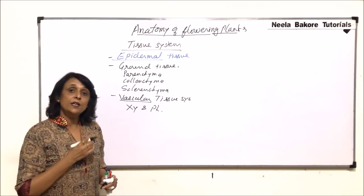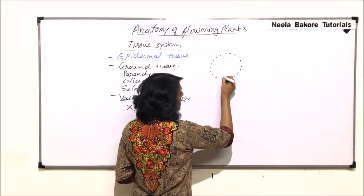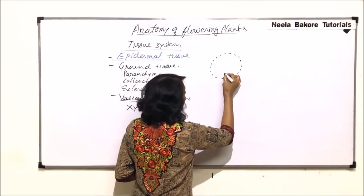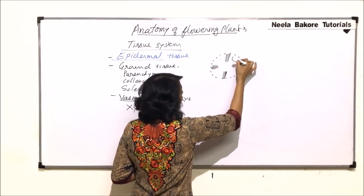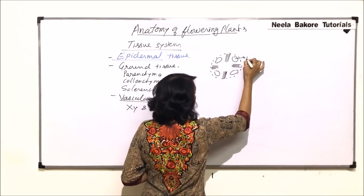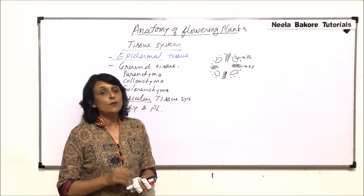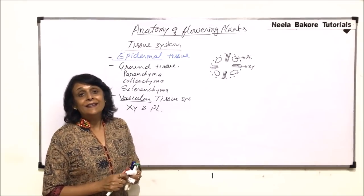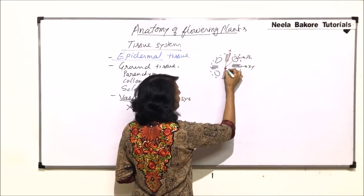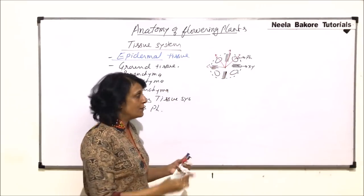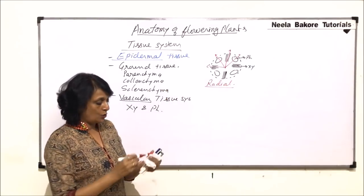Now, how these vascular tissues are arranged determines the type. Suppose this is the section of a part, and here we find xylem bands with alternating bands of phloem. Xylem and phloem are alternating — they are not in the form of a group or a bundle. Their arrangement is such that one radius would have only xylem and another would have only phloem.